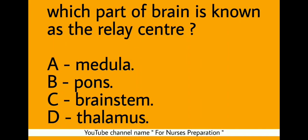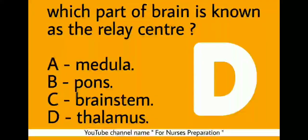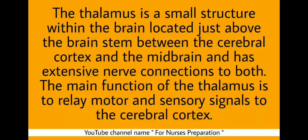Which part of the brain is known as the relay center? Option A, medulla; option B, pons; option C, brain stem; option D, thalamus. The relay center of the brain is option D, thalamus. The thalamus is a small structure within the brain located just above the brain stem, between the cerebral cortex and the midbrain, with extensive nerve connections to both. Its main function is to relay motor and sensory signals to the cerebral cortex.